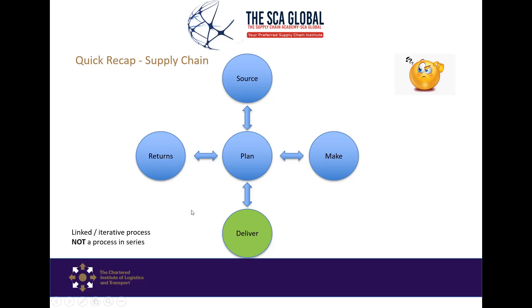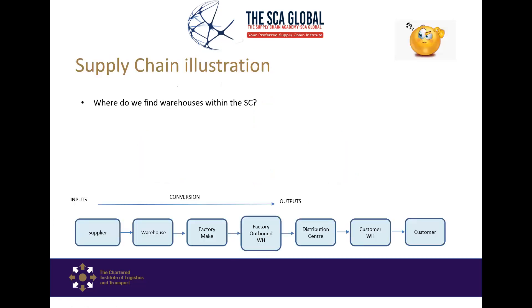Somewhere along the line, maybe the warehouse received chocolates that were damaged or past their expiry date. That has to go back to the factory, which may have to decide: do we rework this chocolate, or do we dump it? You can see it's a very linked and iterative process, happening in synchronization with one another.